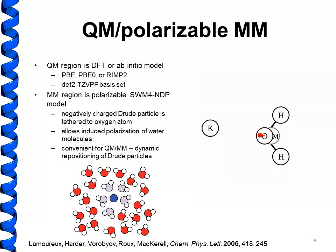This scheme is very convenient for QM/MM simulations because in the Drude model, the positions of the Drude particles are typically propagated dynamically — they move with the heavy atoms over the course of the simulation by assigning them a small fictitious mass taken off the parent atom. When we do QM/MM simulations, instead of performing simultaneous SCF of the Drude positions and the wave function of the QM region, we can simply propagate these Drude particles dynamically, which is a significant saving in both computational cost and implementation complexity.